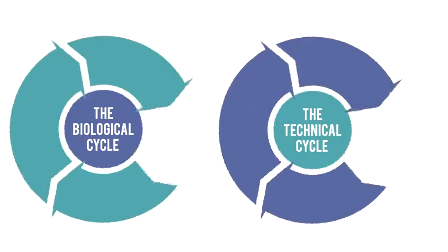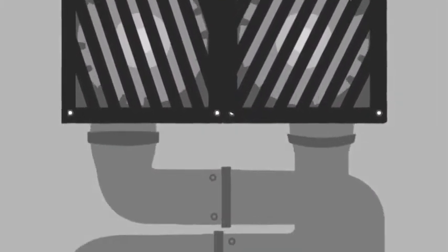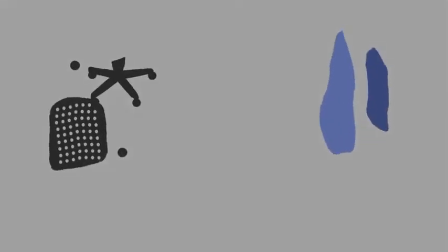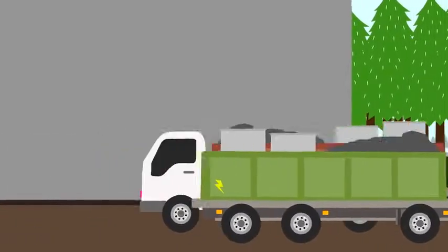Now let's put these two cycles together. Imagine if we could design products to come back to their makers, their technical materials being reused and their biological parts increasing agricultural value. And imagine that these products are made and transported using renewable energy.